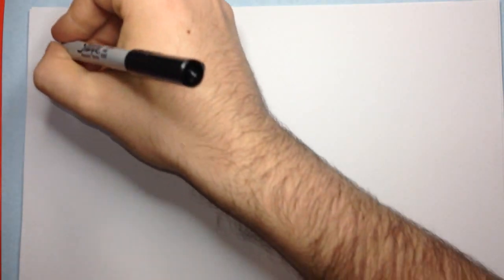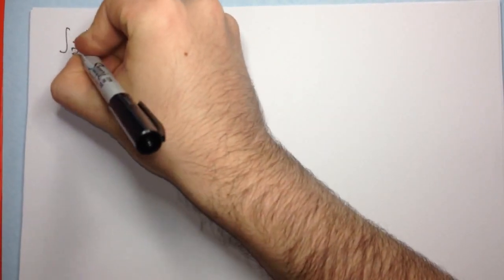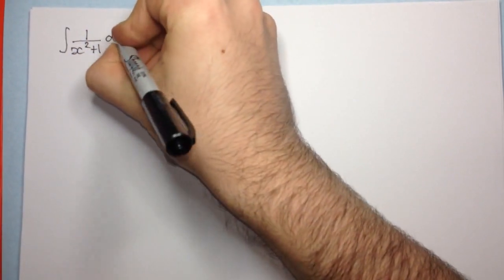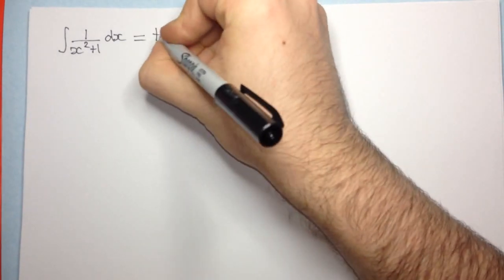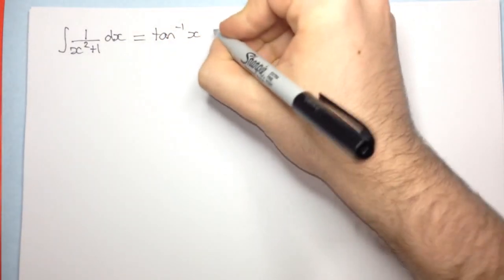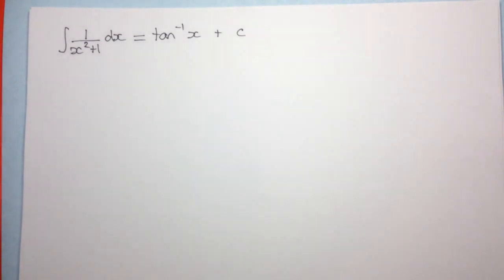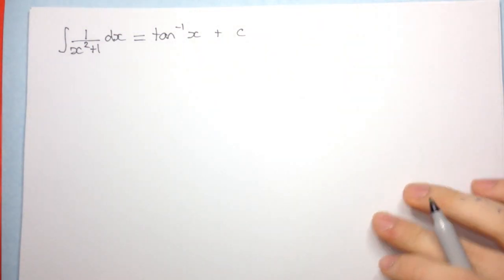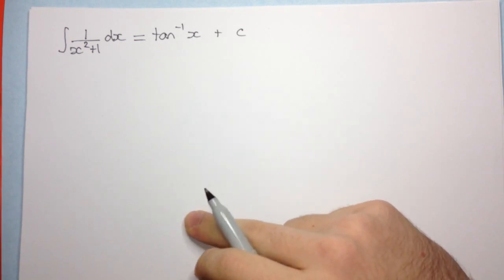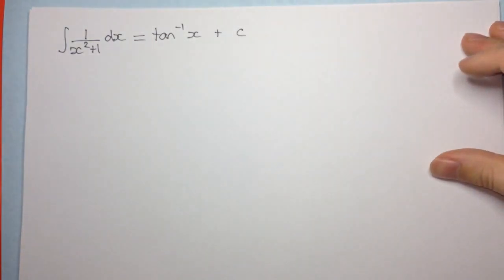Welcome to today's video everyone. So today we're going to be seeing something a little different. It's a result that I thought was quite amazing when I first saw it. Well, the result isn't amazing but the method to get to the result is quite amazing. So it's something you might be familiar with. We're going to be looking at the integral of 1 over x squared plus 1 dx. Now, we all know, or you might know, that this is equal to tan inverse x plus a constant c. But I found this way of getting to this answer quite amazing and I just wanted to show it with everyone. Now, it will involve a bit of knowledge about complex numbers, so hopefully you know your complex numbers and you can follow along.